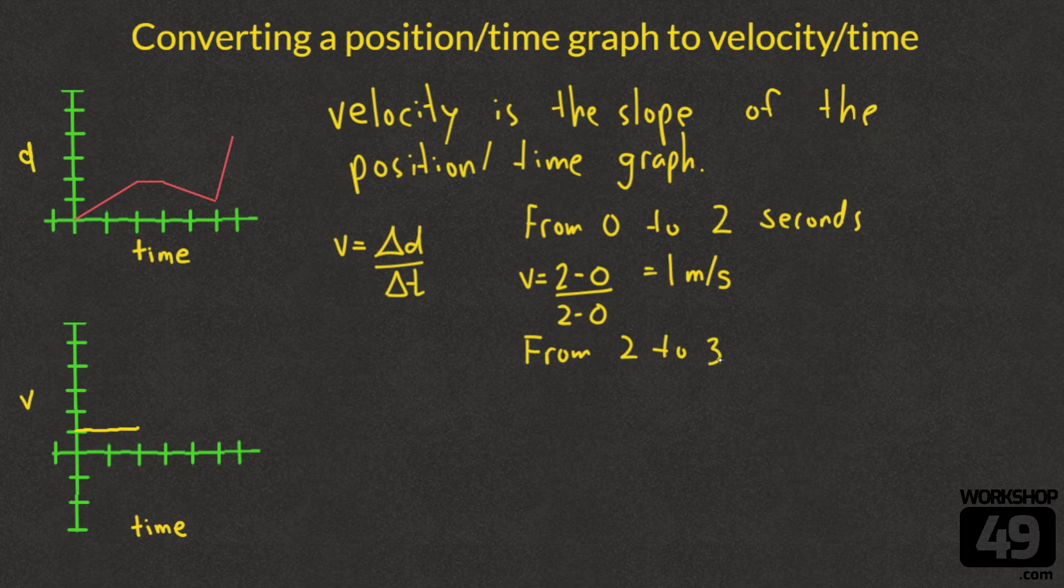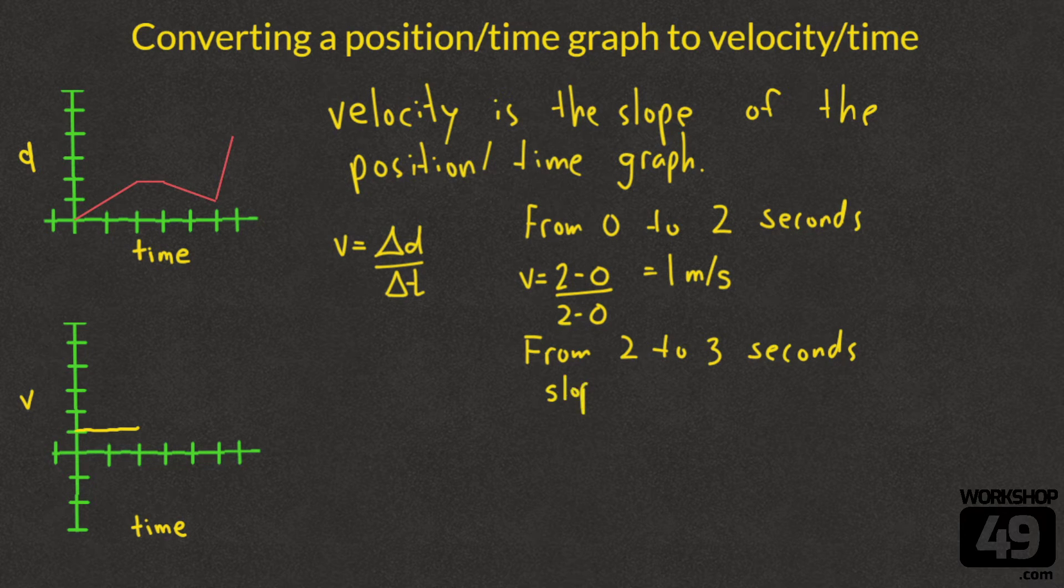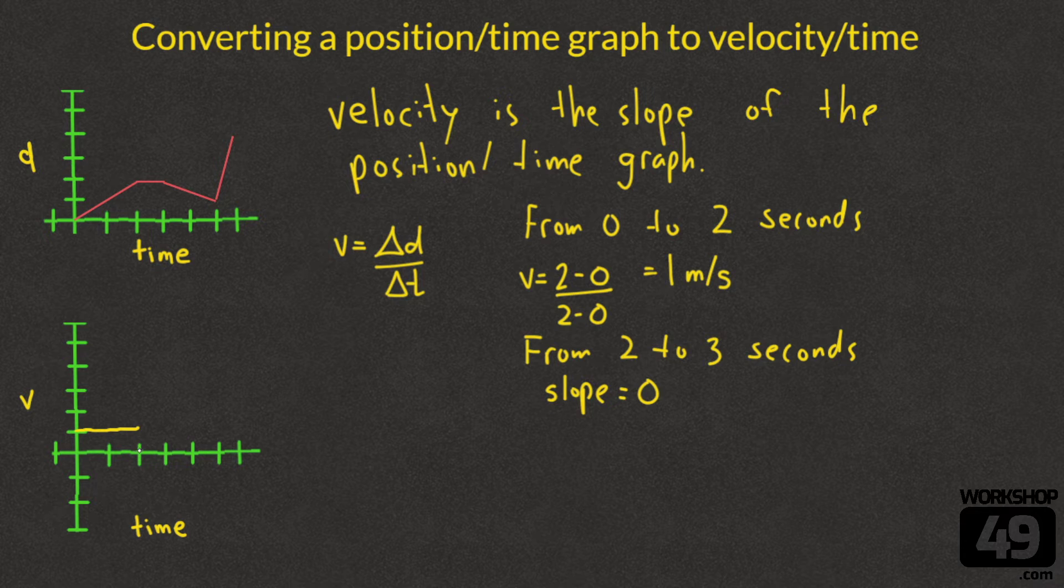The next region is from 2 to 3 seconds where we have a straight line. In this region, it's a flat line. And if you've been discussing stories for position time graphs, you should know that that's a slope equal to 0. It's a flat line, which means our velocity is equal to 0 in that region, which means we can draw a little line from 2 seconds to 3 seconds at a height of 0. It's not moving during that time.